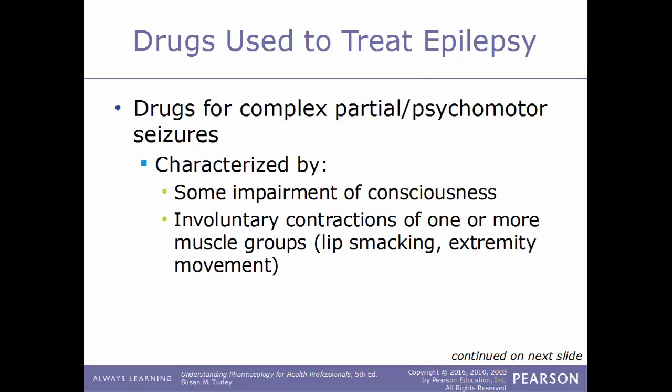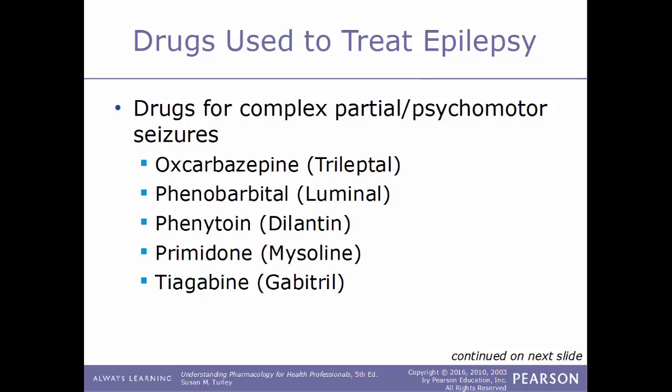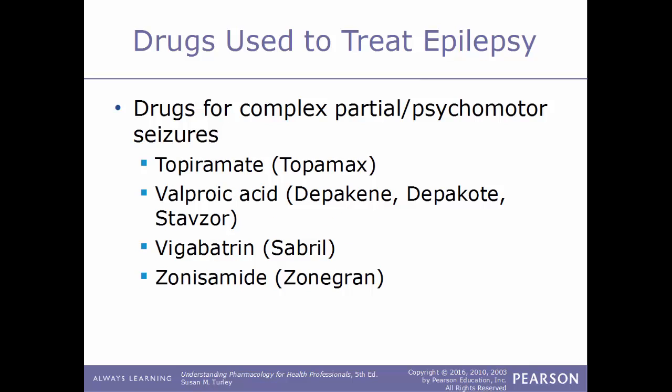Complex partial (psychomotor) seizures are characterized by impaired consciousness and involuntary contractions of one or more muscle groups, such as lip smacking or extremity movement. Drugs used include carbamazepine (Tegretol), clorazepate (Tranxene T-Tab), ethotoin (Peganone), fosphenytoin (Cerebyx), gabapentin (Neurontin), lamotrigine (Lamictal), levetiracetam (Keppra), oxcarbazepine (Trileptal), phenobarbital (Luminal), phenytoin (Dilantin), primidone (Mysoline), tiagabine (Gabitril), topiramate (Topamax), valproic acid (Depakene/Depakote/Stavzor), vigabatrin (Sabril), and zonisamide (Zonegran).